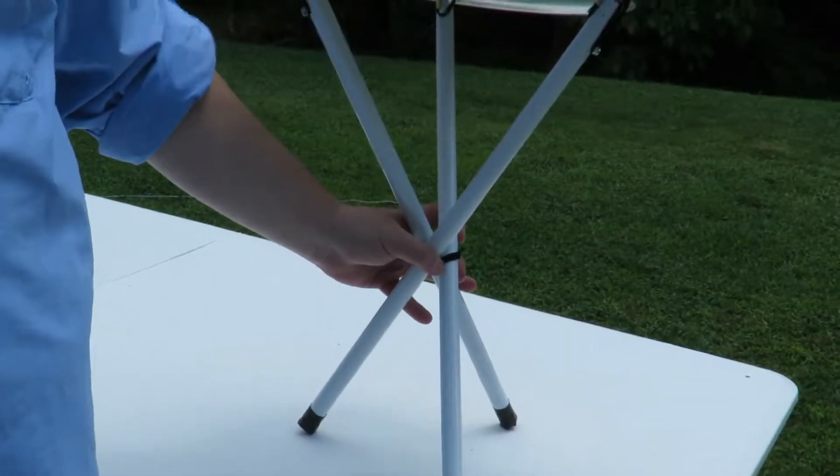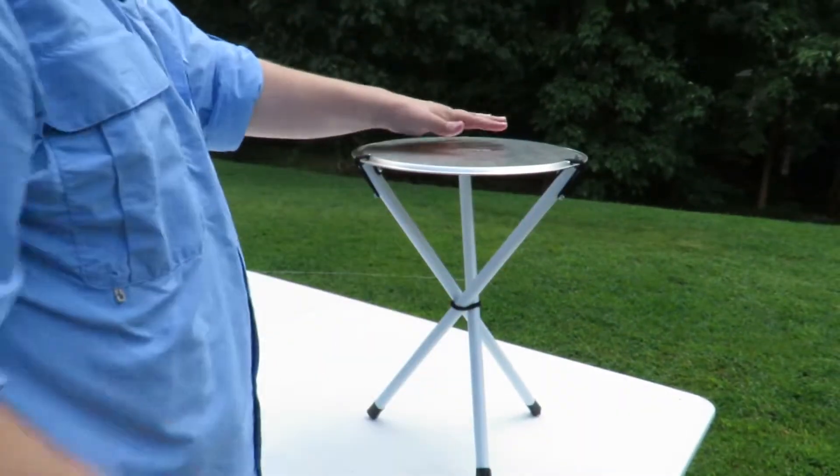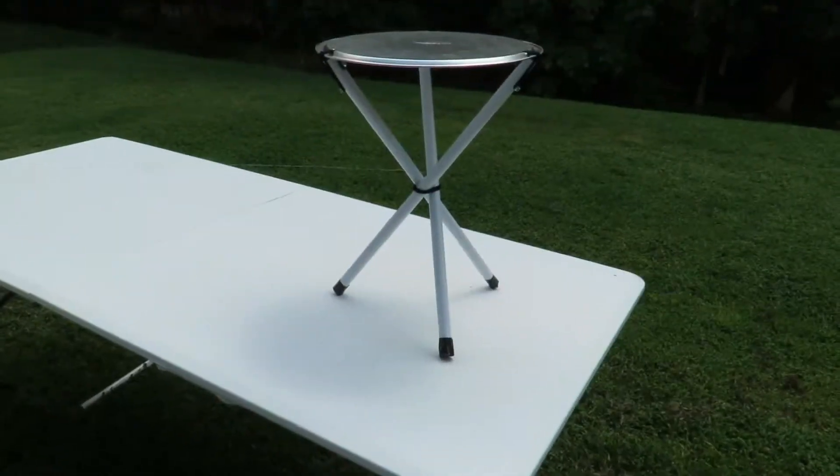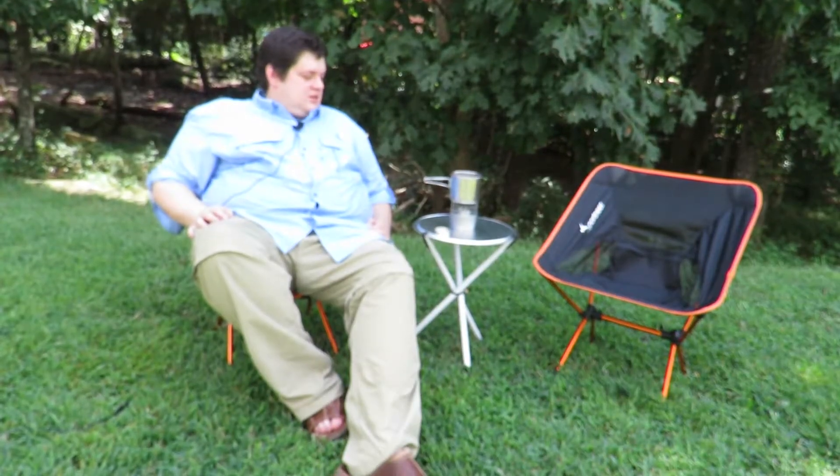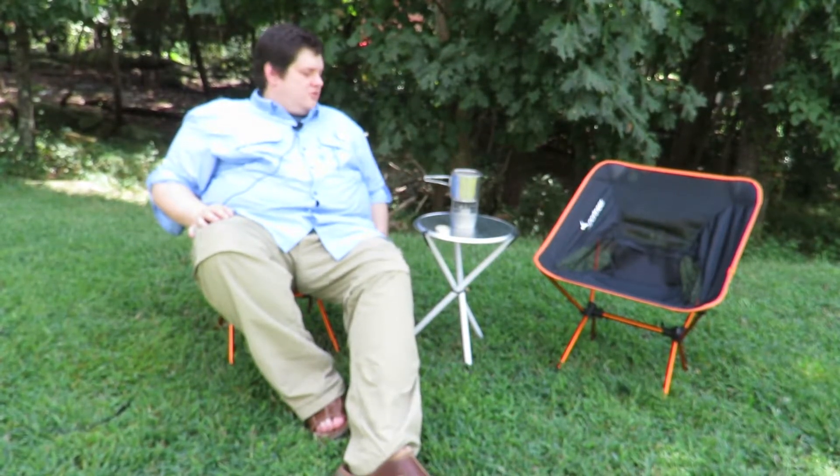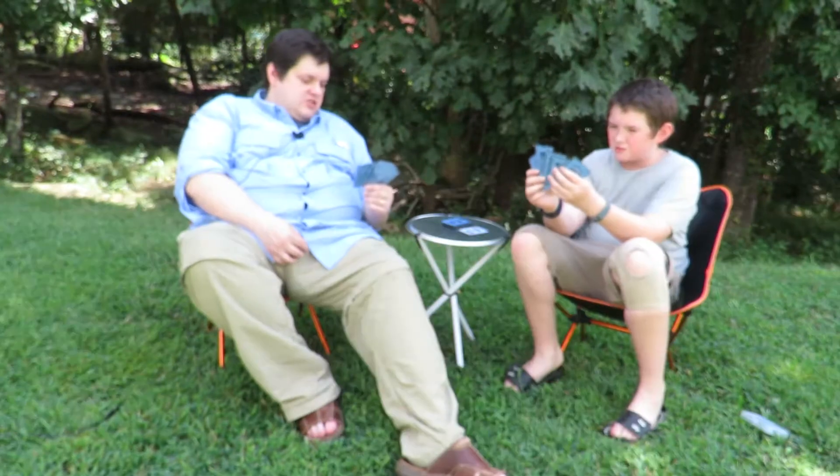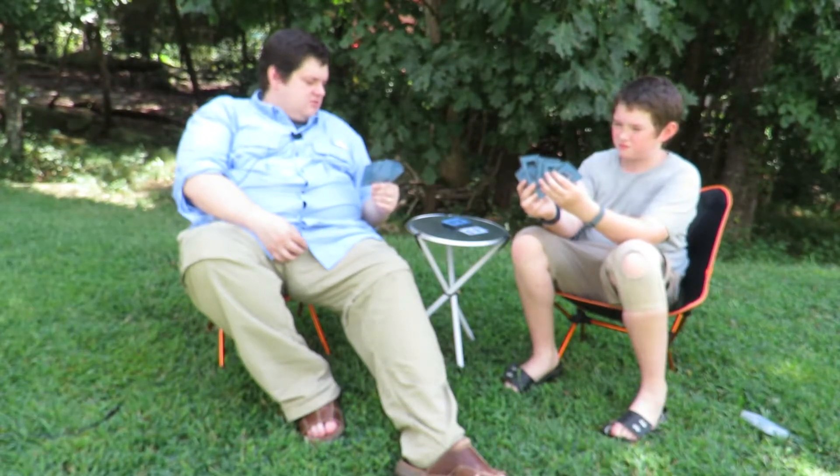The table is now ready to use. Just flip it over and push down gently on the table top until the three legs catch the lip of the pizza pan. This table is just the right height for cooking your dinner. It's also great for playing cards while you're lounging around the campfire.